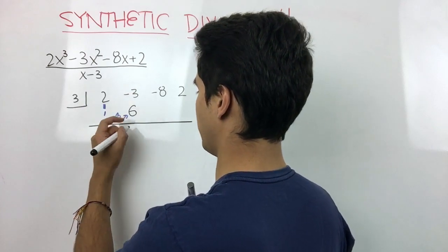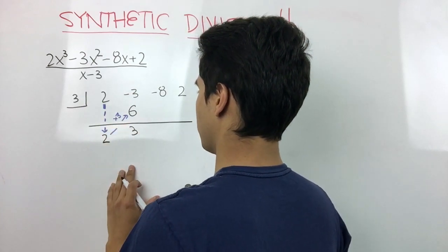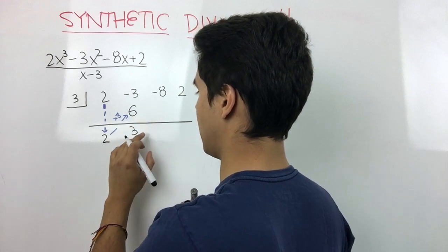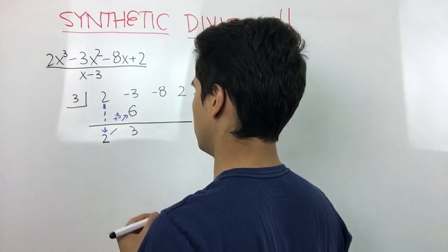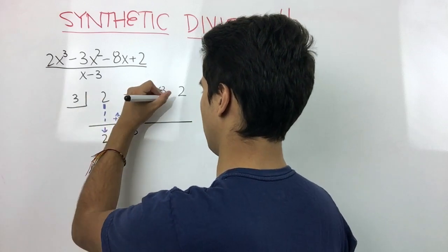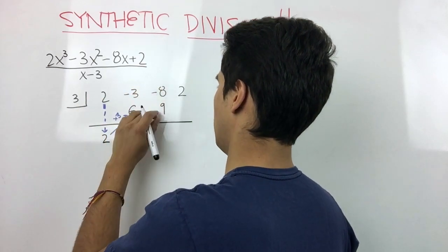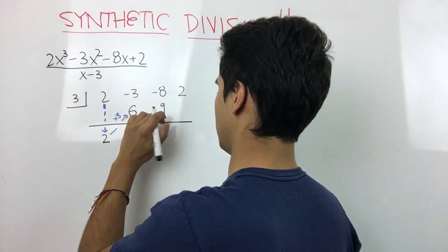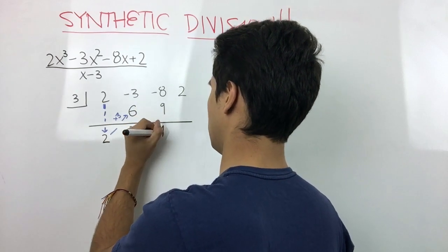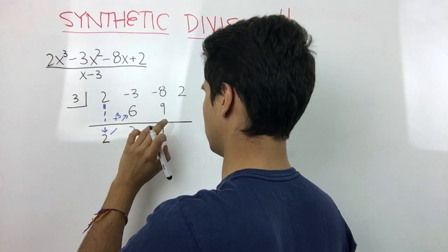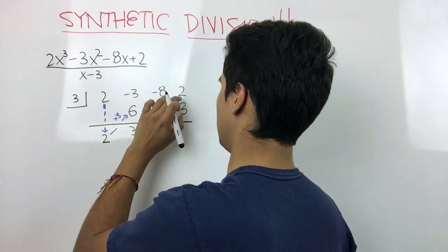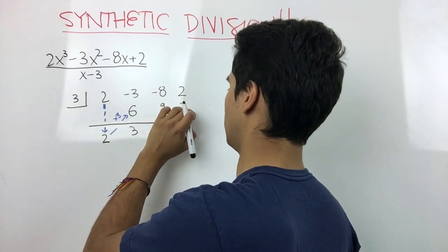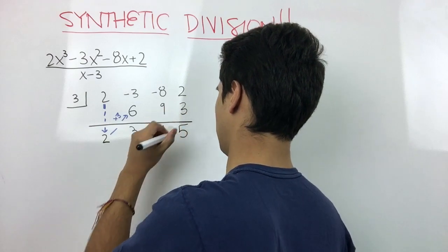So we multiply this number by our constant number. 3 times 3 is 9, and then negative 8 plus 9 is positive 1, and we multiply again. So 1 times 3 is 3, and we add those numbers together. So 2 plus 3 is 5, and now we're done.